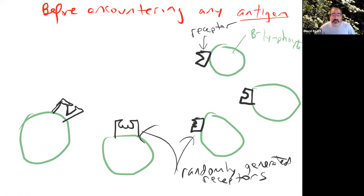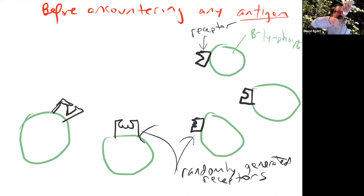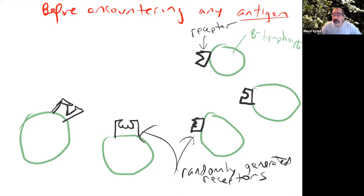These randomly generated receptors haven't bound with anything yet — the thing they might match might not ever exist. It's like cutting out random shapes and putting them out in the world, not knowing what shape you'll need. In this process, you must make sure you don't send out any that will bind to your own tissues. Part of B cells maturing in bone marrow and T cells maturing in the thymus gland is weeding out any lymphocytes with receptors that would bind your own tissues, otherwise you'd end up with an autoimmune disease.